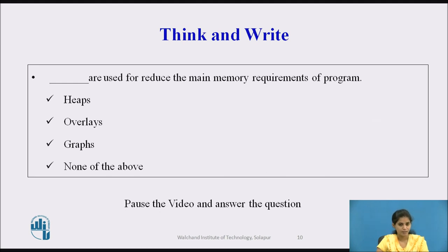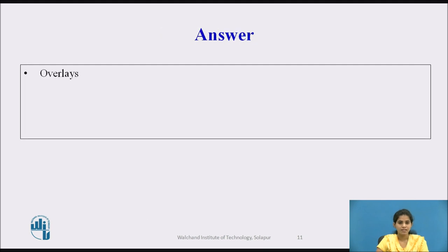After seeing this concept, can you tell me: what is used to reduce the main memory requirement of a program? The options are: heaps, overlays, graphs, or none of the above. Pause the video and think about it. The answer is overlays — overlays are used to reduce the main memory requirements of a program.